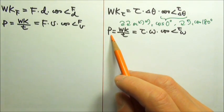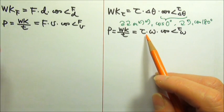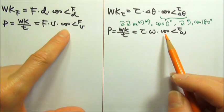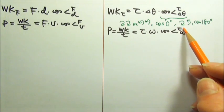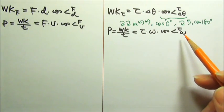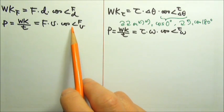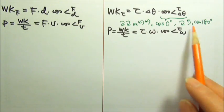For rotation, power is also work over time, which is torque times the angular velocity times cosine the angle between the torque and the angular velocity. For power problems, usually this cosine part is cosine zero degrees, which is one.